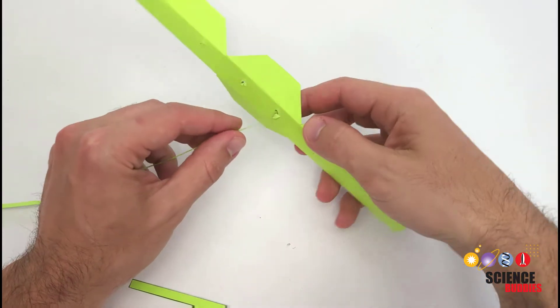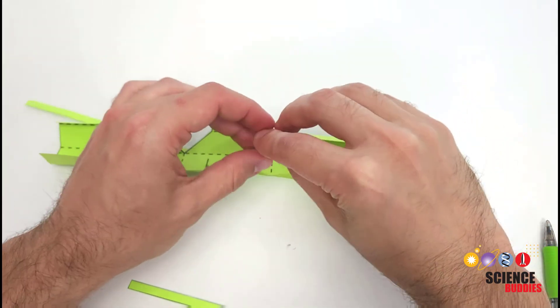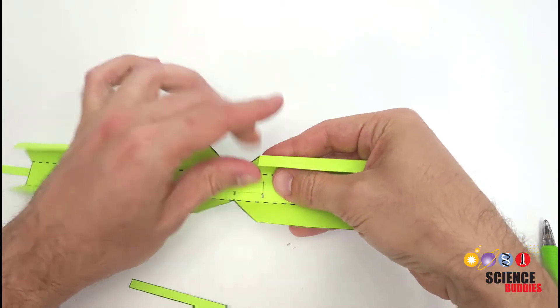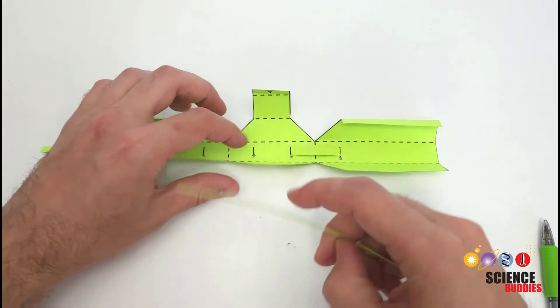Now you're ready to thread the tendons through the slots. Flip the paper over and push a tendon through one of the center slots from the back. Then pull it through and feed it through one of the outer slots from the front. Then repeat this on the other side.